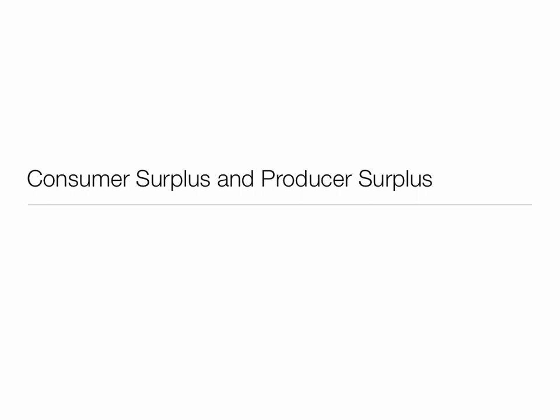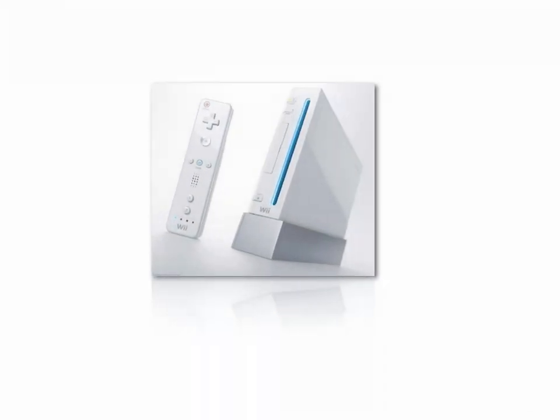I'm going to try to introduce a practical example of consumer surplus and producer surplus to help you understand this concept a little bit better. Often when a company like Nintendo introduces a new product like the Nintendo Wii, they just don't have enough of it. There always seems to be a shortage, there always seems to be a line. What they're trying to do is capture these ideas of consumer surplus, or they're trying to reduce consumer surplus.